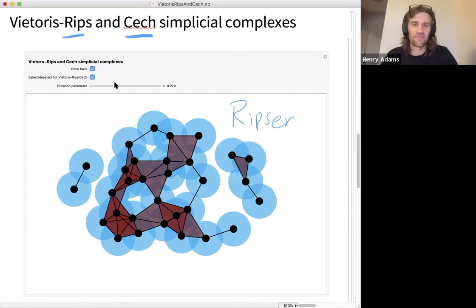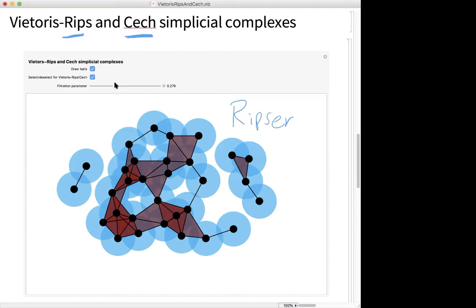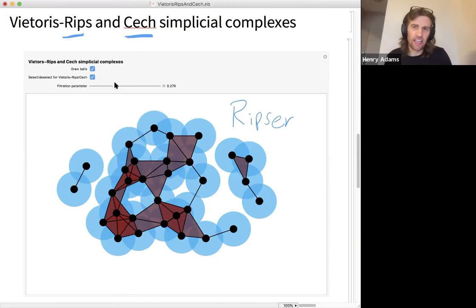So any public questions? Could you possibly give an example of why you would use the Vietoris-Rips complex versus the Čech complex? Computation. You pretty much, in data context, you pretty much always wish you could compute the Čech complex, but it's too hard. It's too difficult. Like, your computer would never stop running.